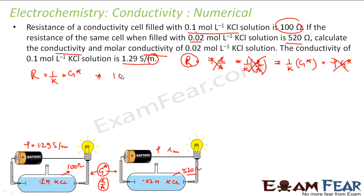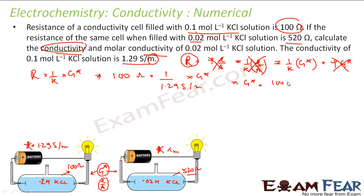Putting in the values: 100 ohms equals 1 by K, where K is 1.29 S per meter, times G-star. Solving this gives G-star equals 100 ohms times 1.29 S per meter. Since S is 1 per ohm, ohms cancel and you get G-star equals 129 per meter. That is the cell constant.